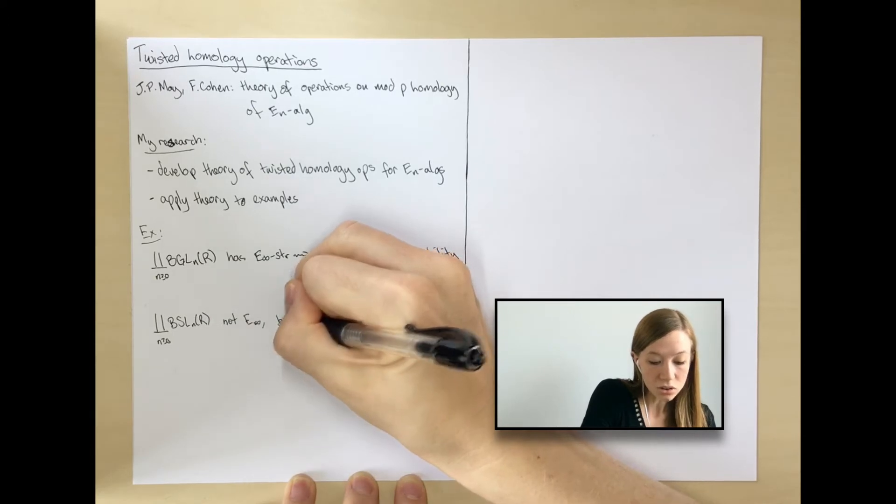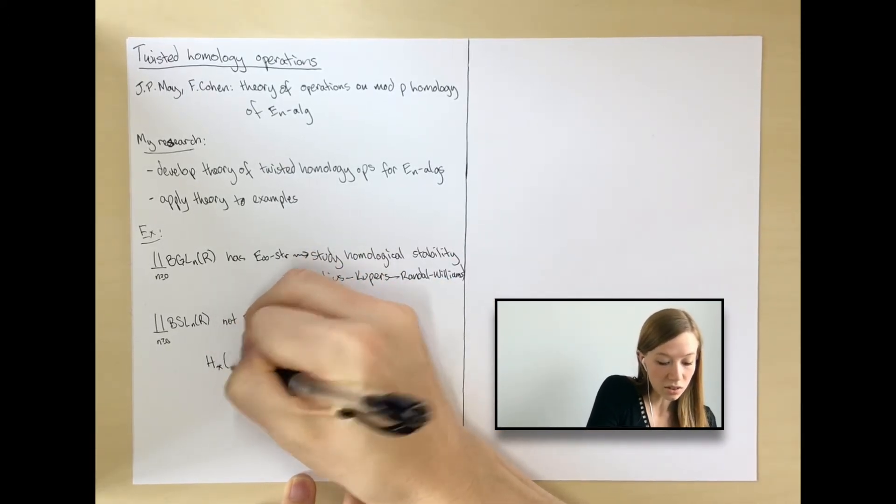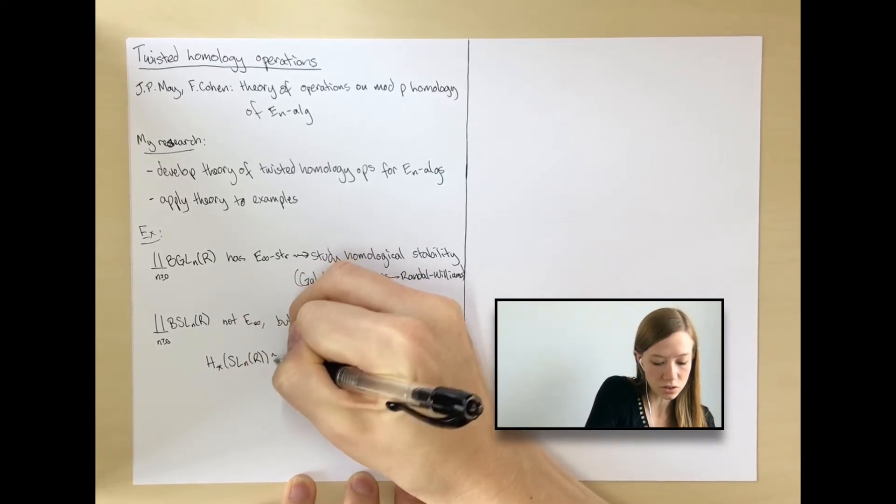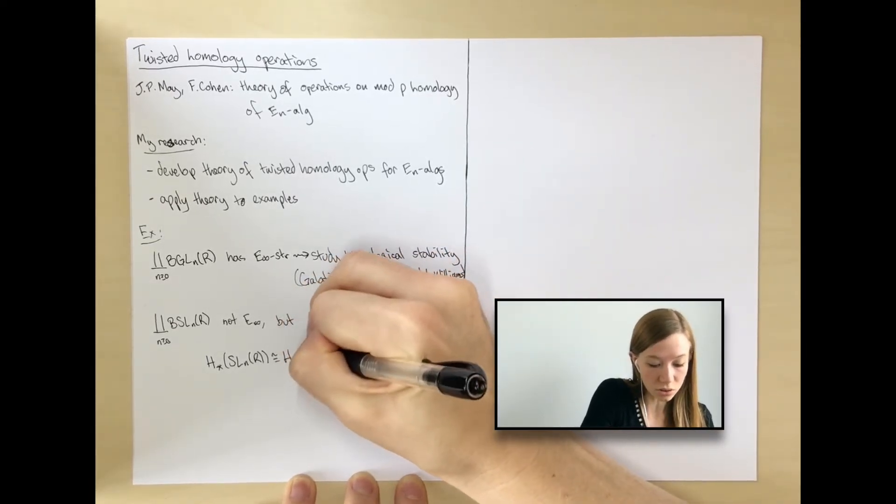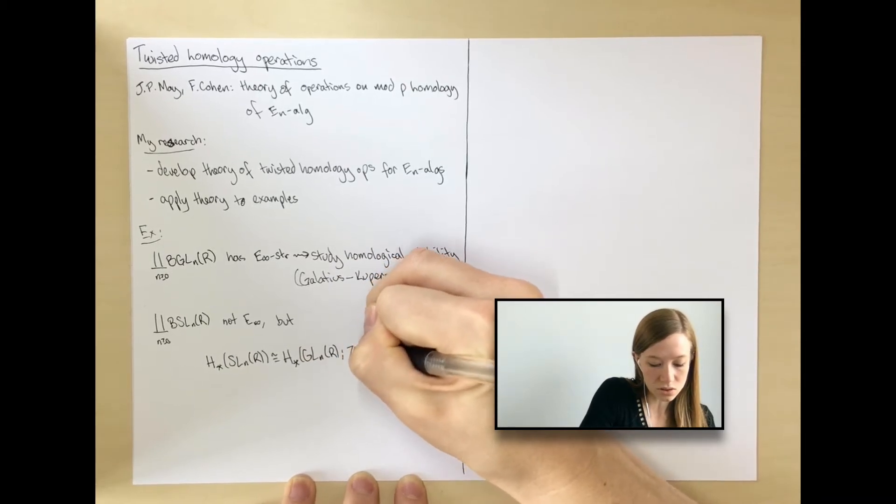But what you can do is use this useful fact that the homology of special linear groups, let's just say with integral coefficients, is isomorphic to the homology of general linear groups with coefficients in some twisted system.